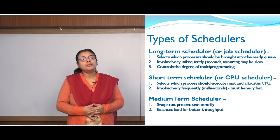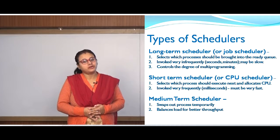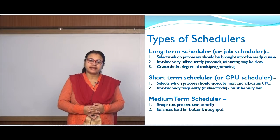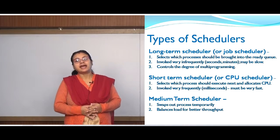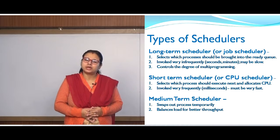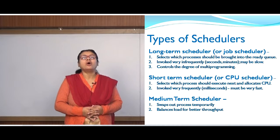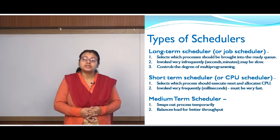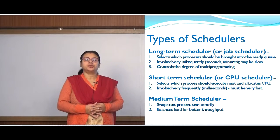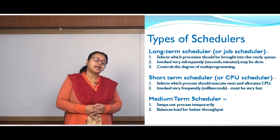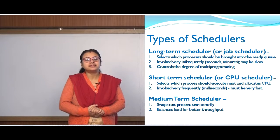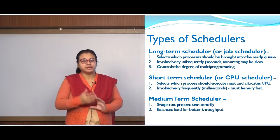The degree of multiprogramming refers to how many processes are there at that moment in your ready queue. When processes are created, they are in the new state and residing in your local disk or secondary storage device. It is the responsibility of the long term scheduler to bring some of them into the main memory, that is into your primary memory.